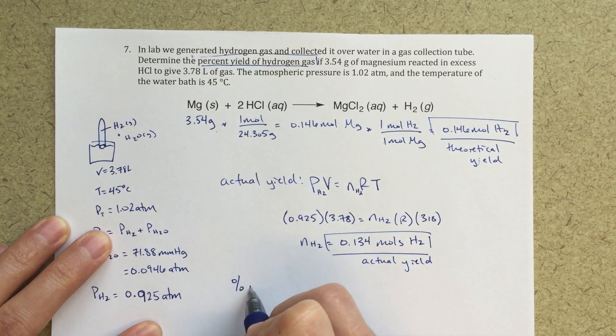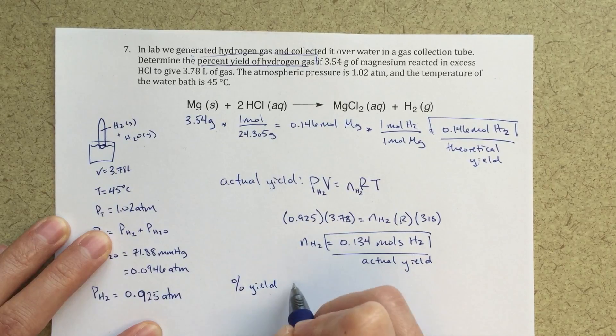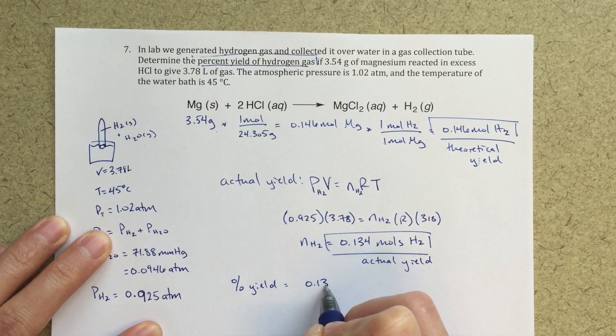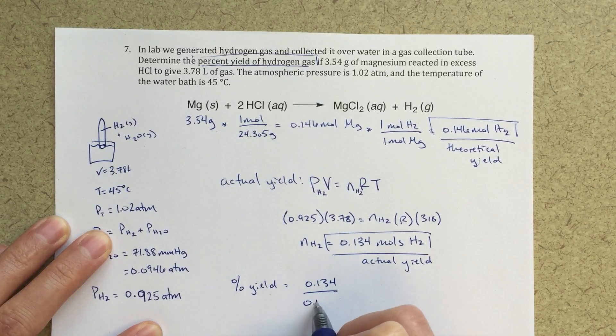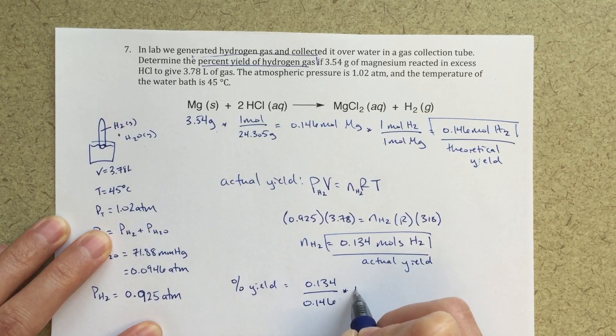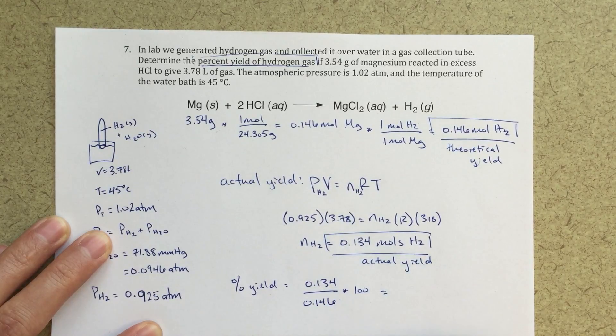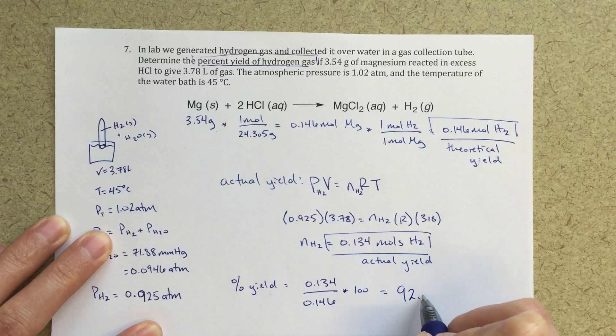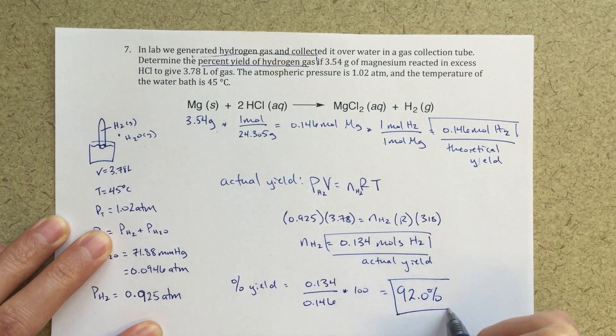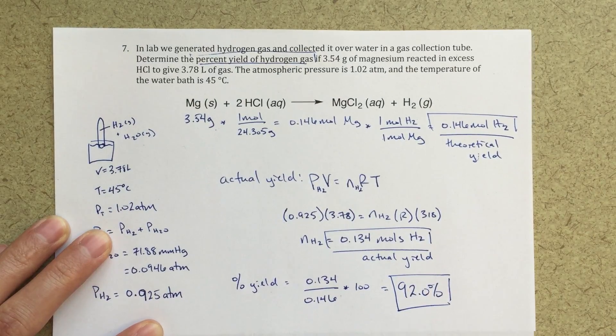And now to find my percent yield, that's going to be my actual over my theoretical, how much I theoretically could obtain. Again, multiply that by 100 to turn to a percent and we get 92.0% yield for this reaction. So that's what we're looking for there.